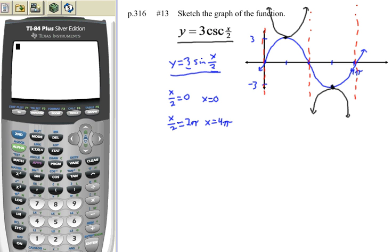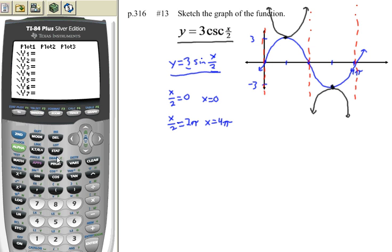Now let's just verify this graph using our calculator. I'll press the y equals key. And we want to graph y equals 3 times the cosecant. Now, I can't graph cosecant because I don't have a button for cosecant. So I'll just type it in as 1 over sine. So 1 over the sine of x over 2. And we'll close all of our parentheses. I think that'll do it. And let's take a look at this graph.